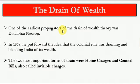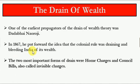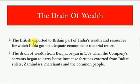One of the earliest propagators of the drain of wealth theory was Dadabhai Naoroji in 1867. He put forward the idea that colonial rule was draining and bleeding India of its wealth. The two most important forms of drain were home charges and council bills, also called invisible charges.